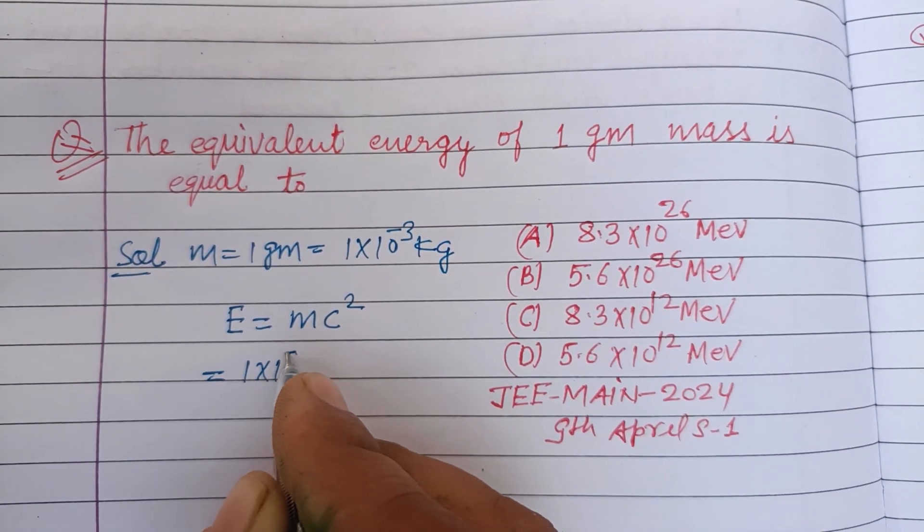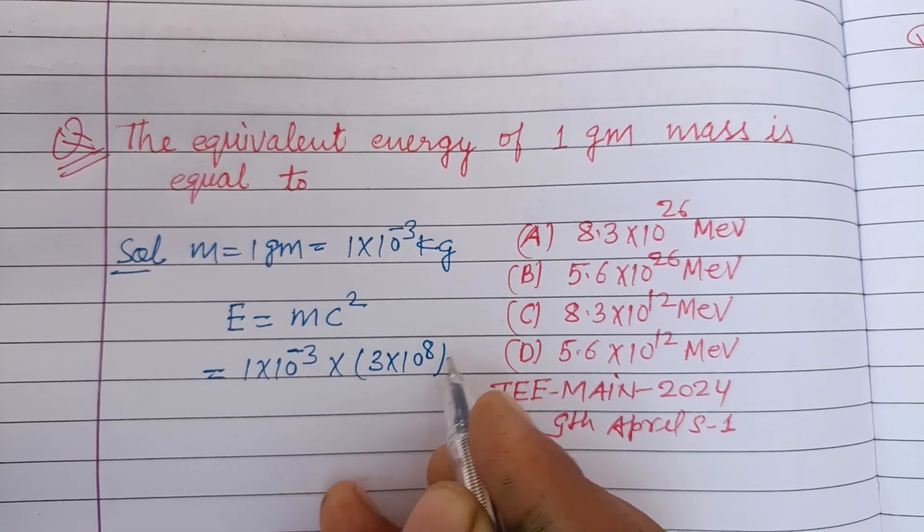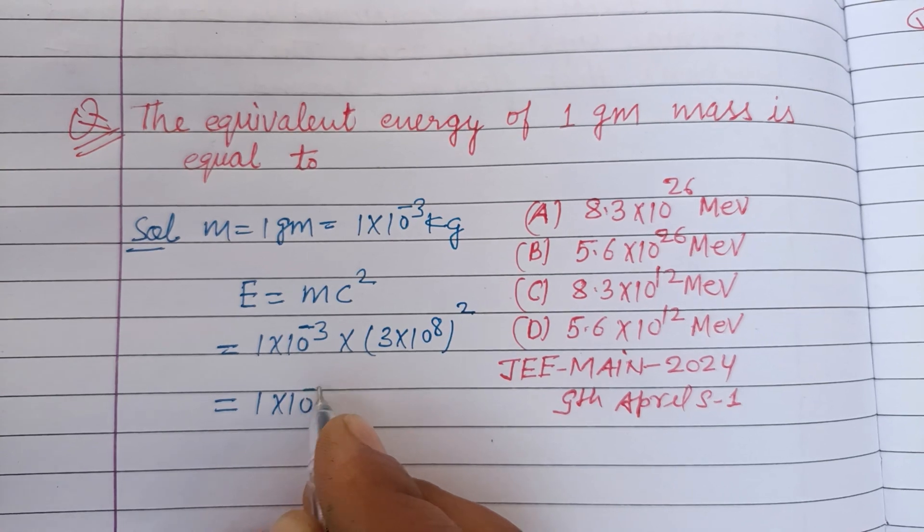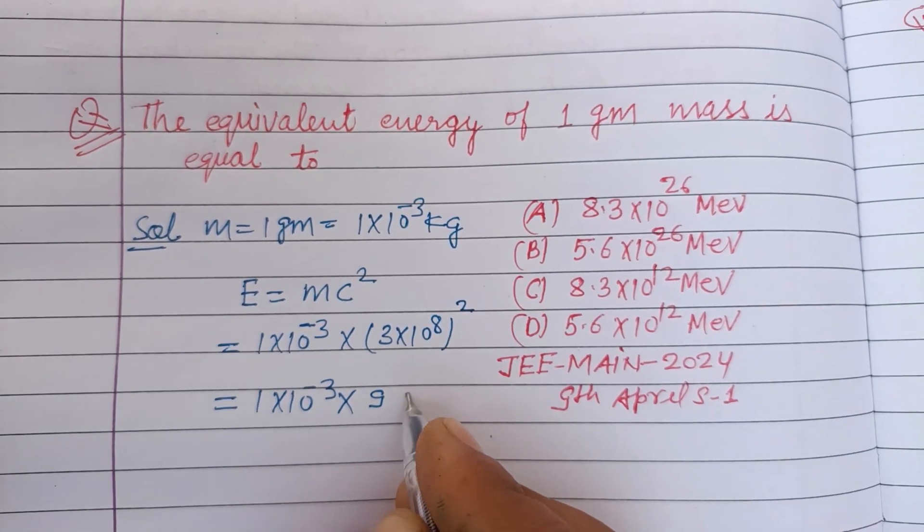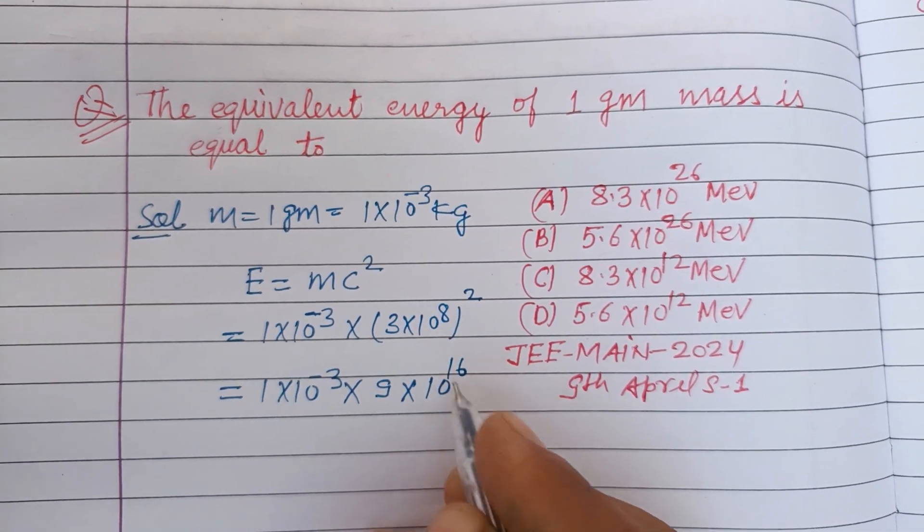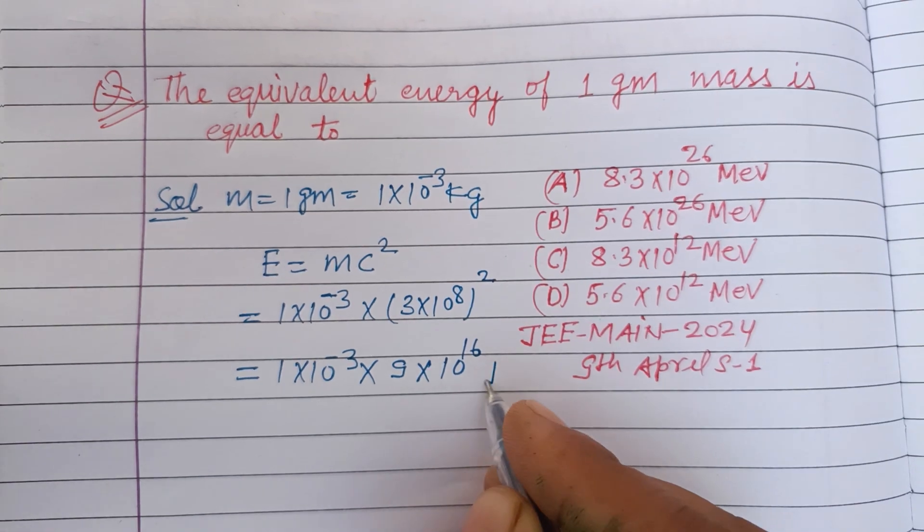M is 1 into 10 to the power minus 3, and c, you know, is 3 into 10 to the power 8 meter per second squared. So 1 into 10 to the power minus 3, times 3 into 3—this is 9—times 10 to the power 8 into 2, this is 16. So this is Joule.